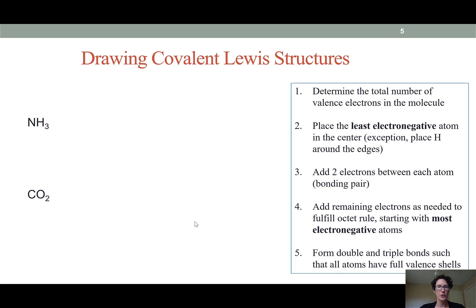The first step when drawing a Lewis structure is to determine the total number of valence electrons available. Nitrogen has five valence electrons with the 2s2 and 2p3 configuration. So we're getting a total of five electrons from each nitrogen and one electron from each hydrogen. That brings us to a total of eight valence electrons that we can distribute around our molecule.